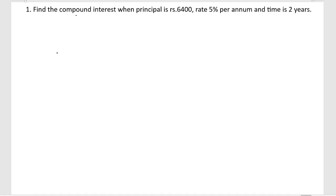First problem, find the compound interest. We have to find the compound interest when principal amount is 6400 rupees and rate of interest is 5% per annum and time is given as 2 years, so we are going to calculate the compound interest for 2 years.